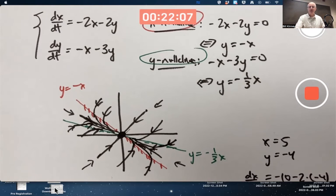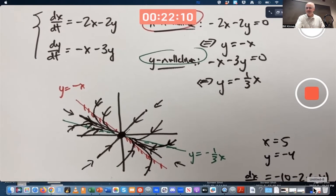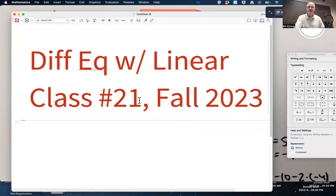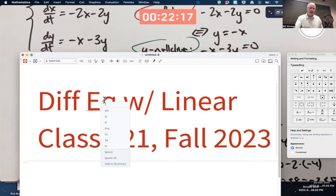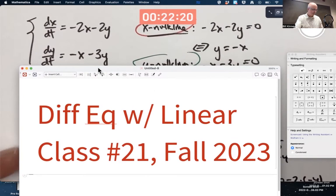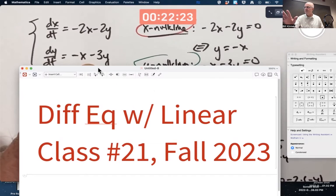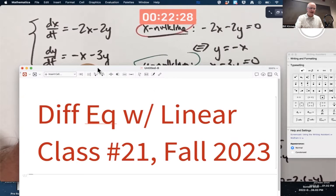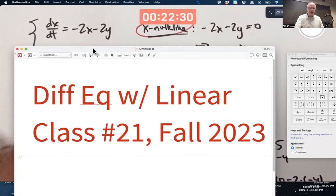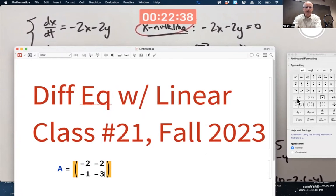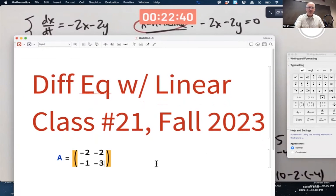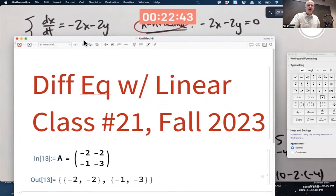Before we do the linear algebra problem though, let's have Mathematica do something else with this. So I'm going to go ahead and enter a coefficient matrix for the system. So I could use vector plot or stream plot to confirm the phase plane, but that's not my goal here. Let's enter that matrix, -2, -2, -1, -3. I'll call it A. As always, I guess, -2, -2, -1, -3.